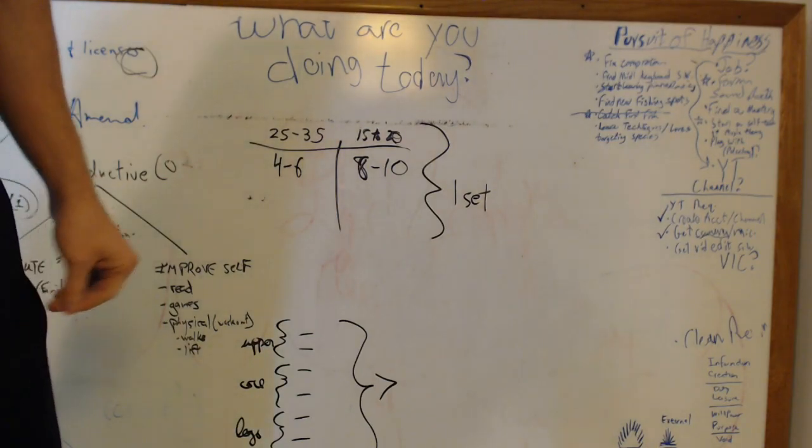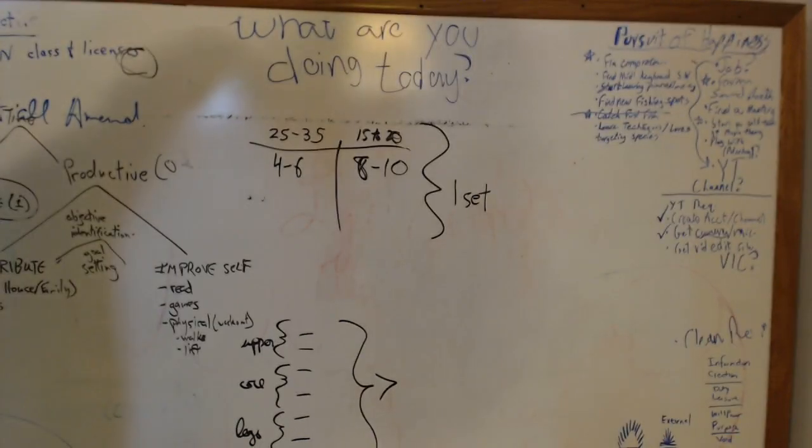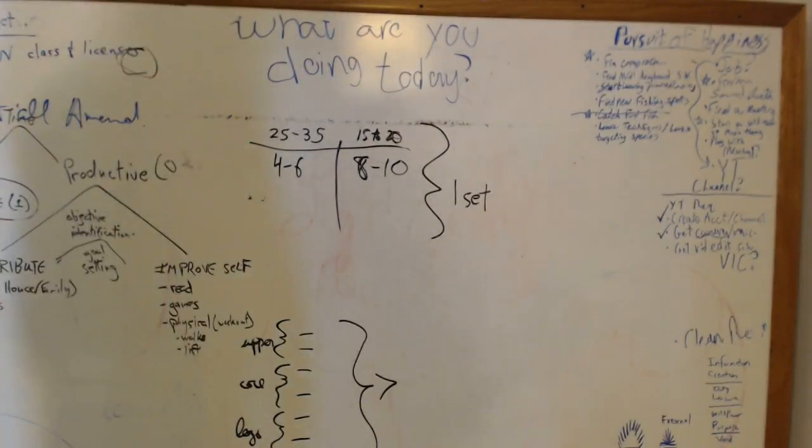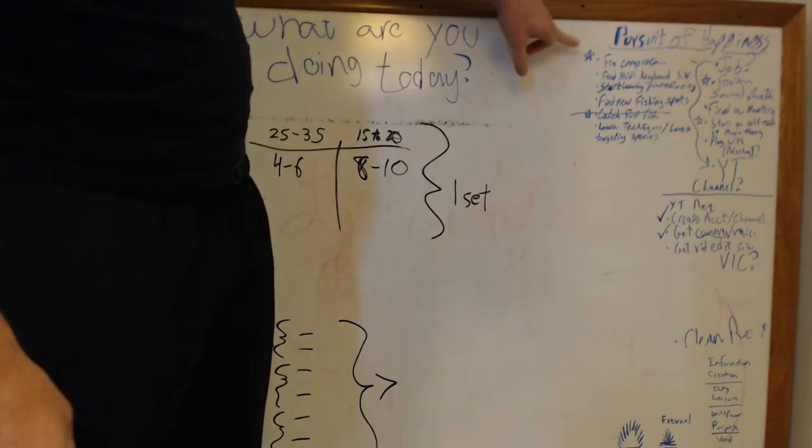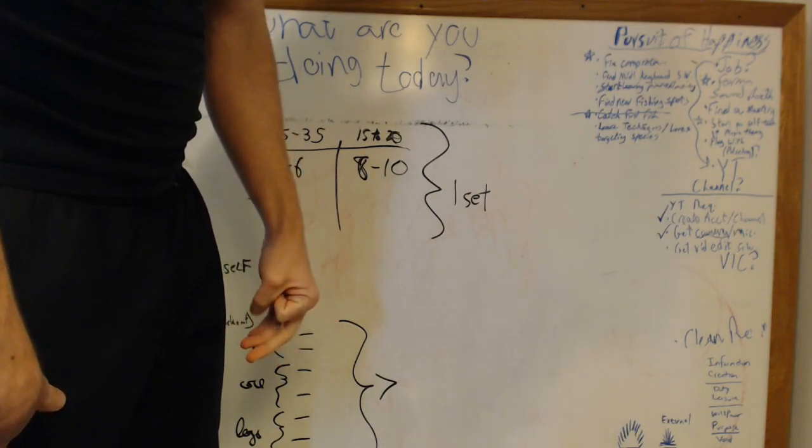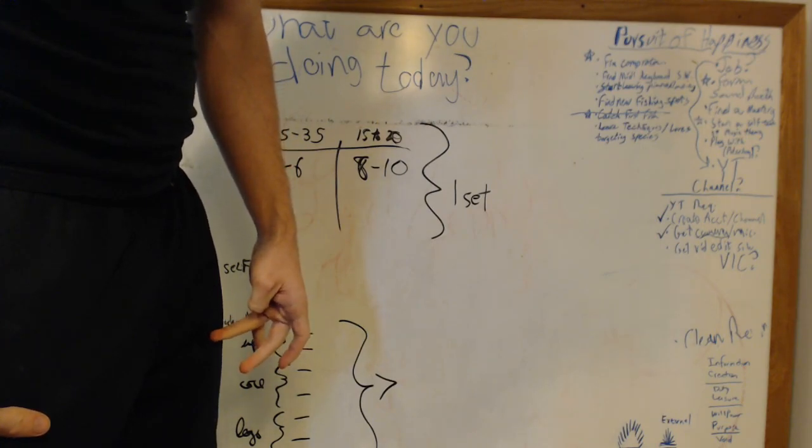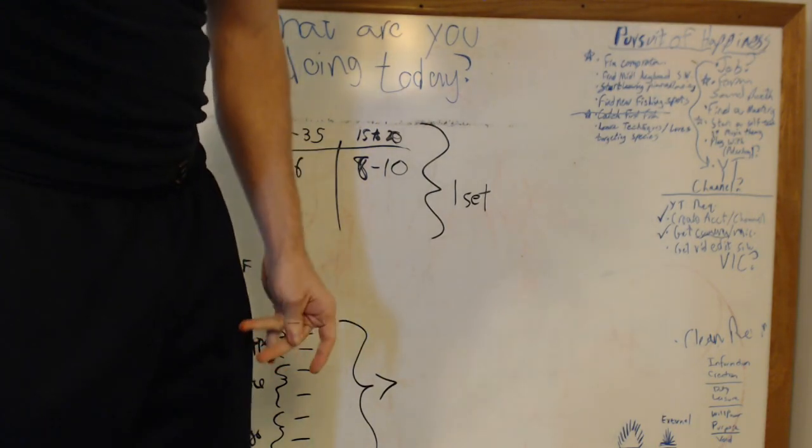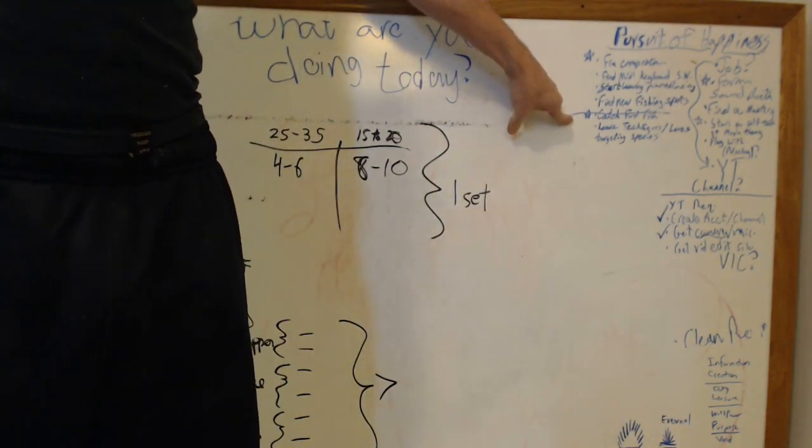Okay, so the top right, I can read some of this to you because I know it's kind of - he doesn't have the best handwriting of all time. Pursuit of happiness. So he categorizes different aspects of his life on here, and this is kind of organizing different parts of himself. Fix comprota, which is this cute way of saying fix computer. Find mini keyboard, start piano something. Find new fishing spots, catch first fish - he did that, so he crossed it off, what a boss.